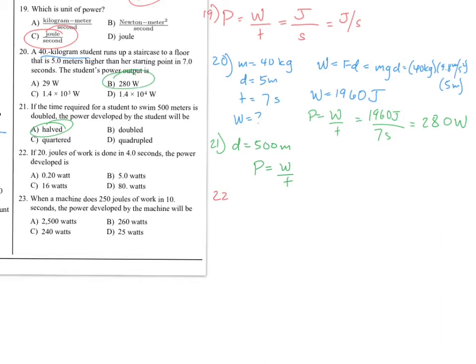Okay. Next is 22. Alright. If our work is 20 joules and we have a time of 4 seconds, what is the power? Simple enough. Work over time. 20 divided by 4. Let's not forget units. is equal to 5 watts. Choice B.